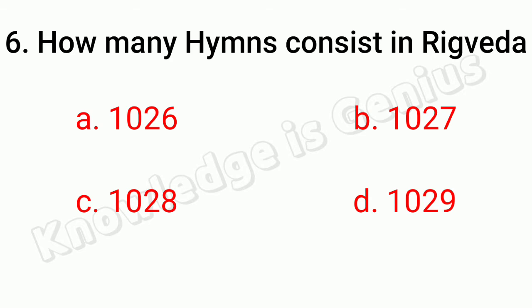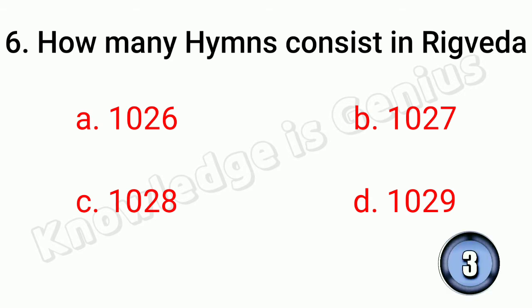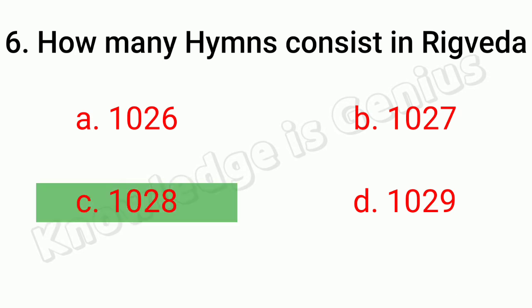How many hymns consist in Rig Veda? A. 1026. B. 1027. C. 1028. D. 1029. Answer: A. 1028 hymns.